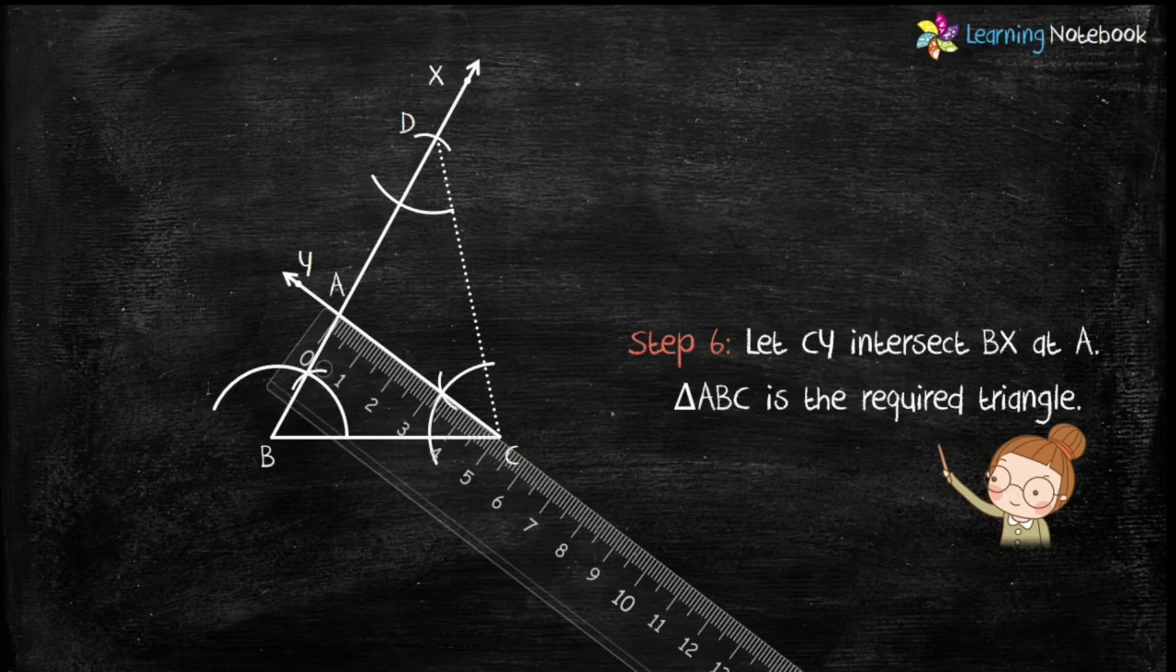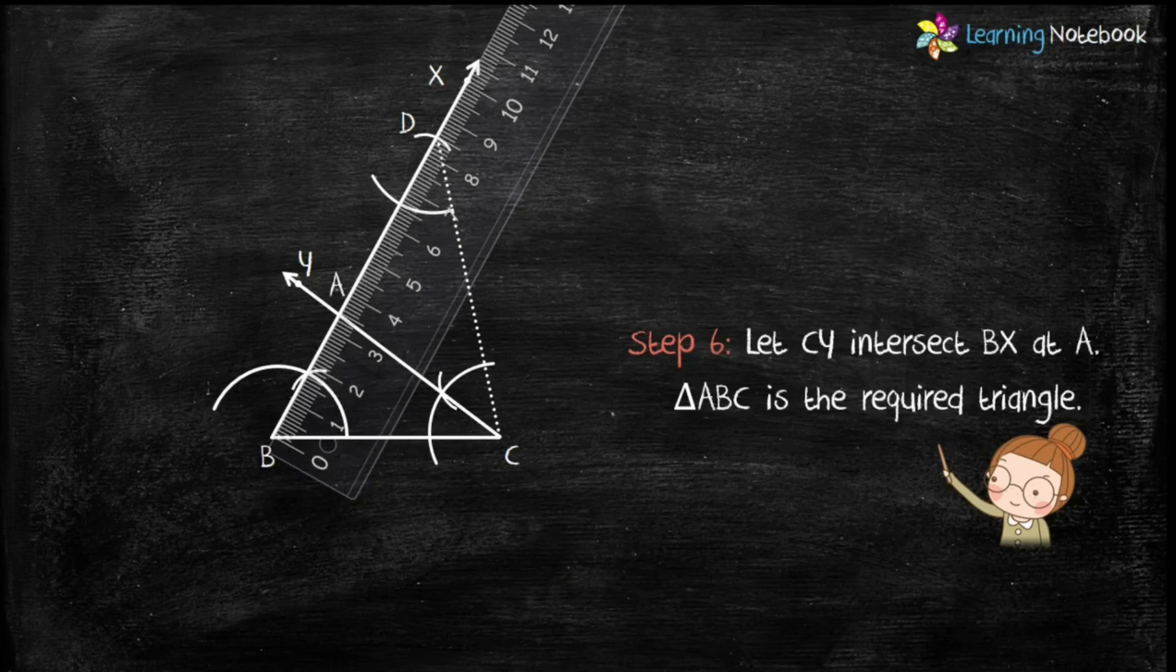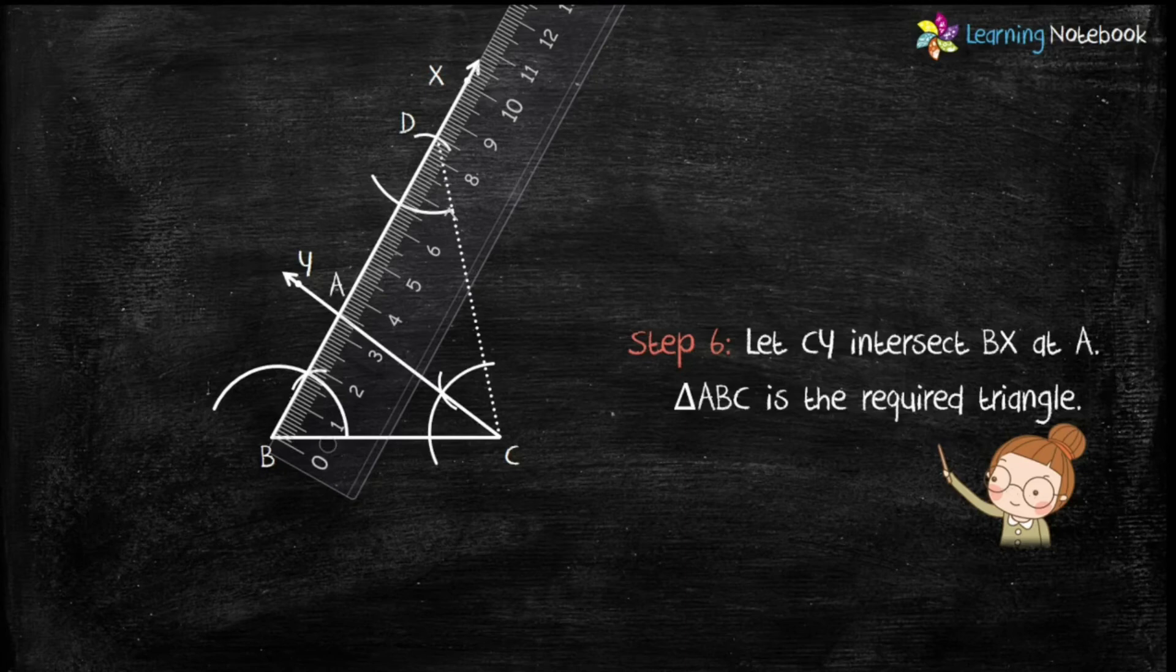AC equals 5 centimeters and AB equals 3.4 centimeters. So AB plus AC equals 8.4 centimeters. Therefore we can say that this construction is correct.